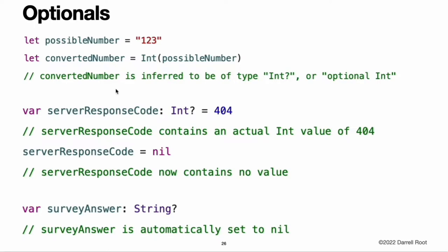Here is an example of how optionals can be used to cope with the absence of a value. Swift's Int type has an initializer which tries to convert a string value into an Int value. However, not every string can be converted into an integer. The string "123" can be converted into the numeric value 123, but the string "hello world" does not have an obvious numeric value to convert to. The example uses the initializer to try to convert a string into an Int. Because the initializer might fail, it returns an optional Int rather than an Int.